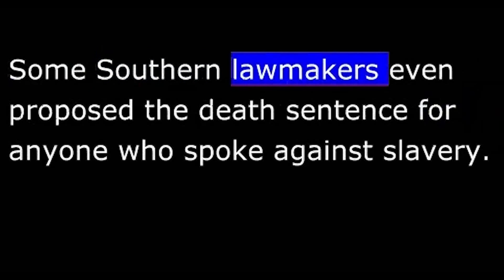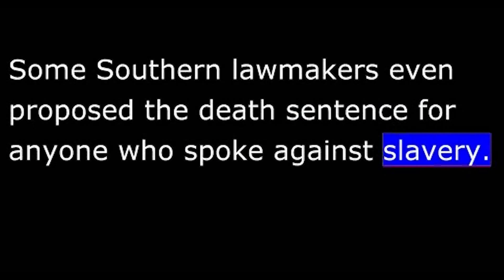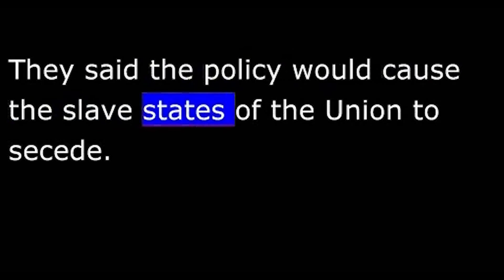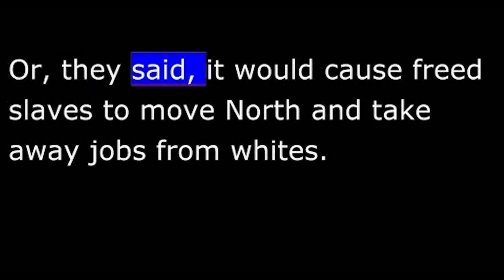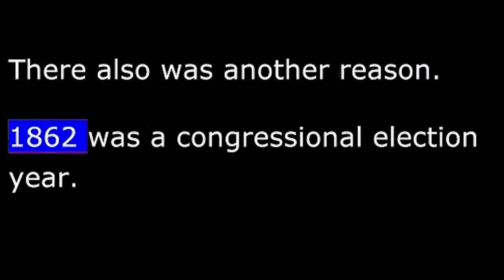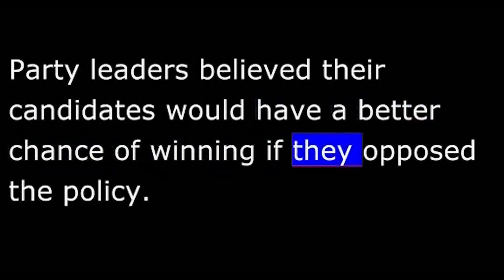Some Southern lawmakers even proposed the death sentence for anyone who spoke against slavery. In the North, most people cheered the new policy on slaves, though some opposed it. They said the policy would cause the slave states of the Union to secede and join the Confederacy, or that it would cause freed slaves to move north and take away jobs from whites. There was also a political dimension: 1862 was a congressional election year, and Democratic Party leaders believed their candidates would have a better chance of winning if they opposed the policy.